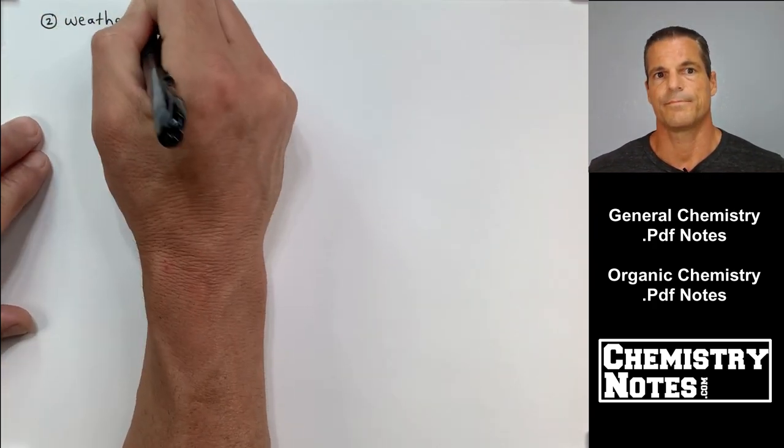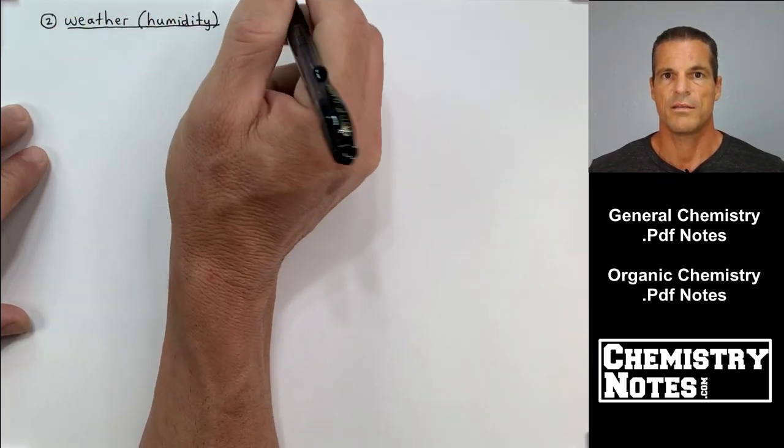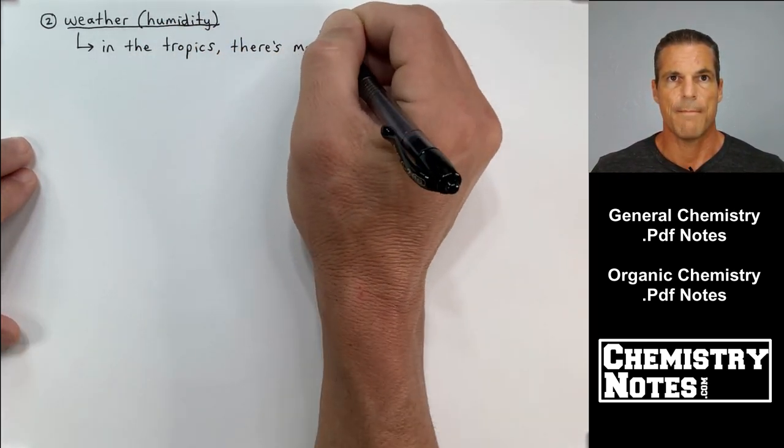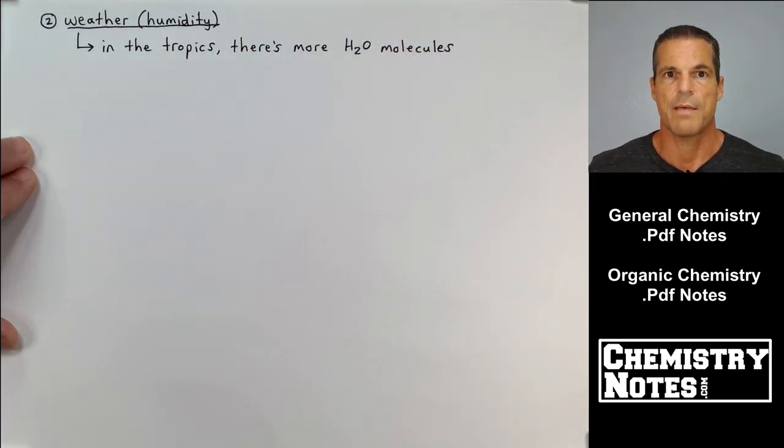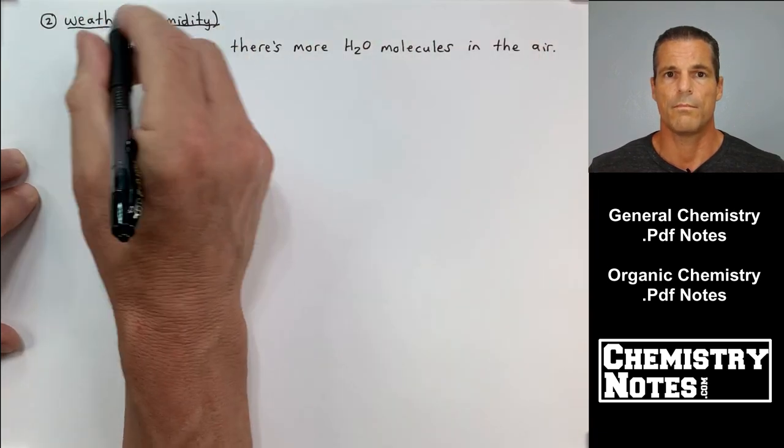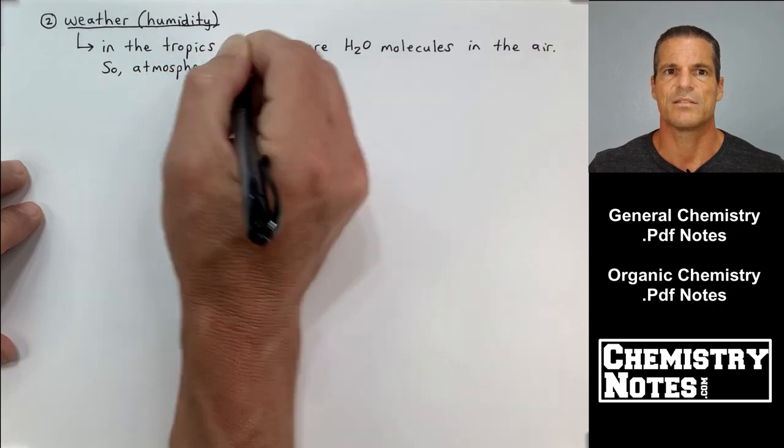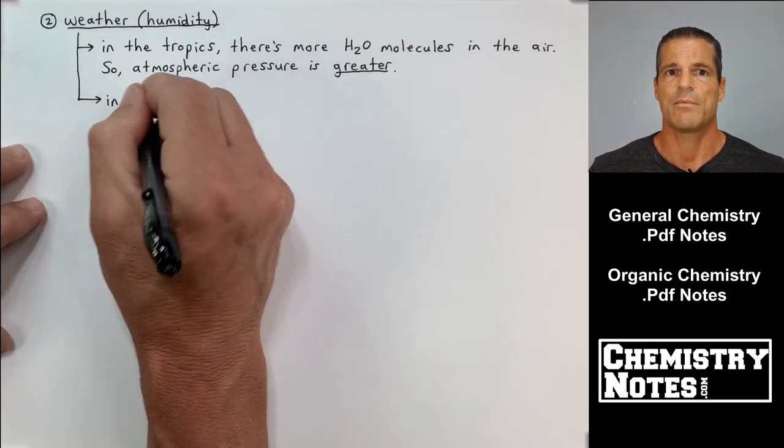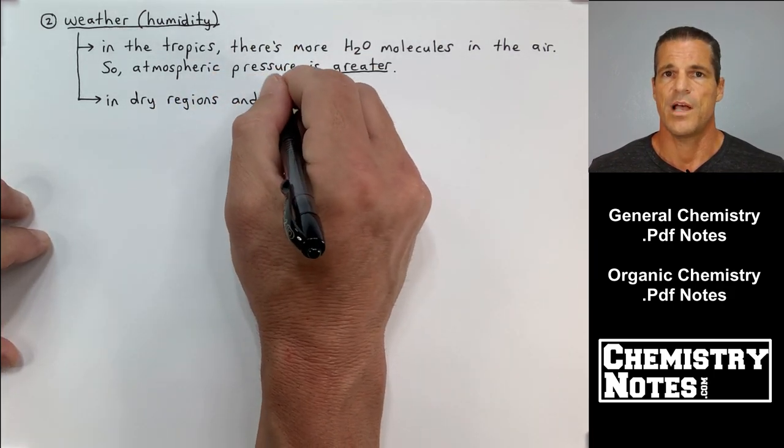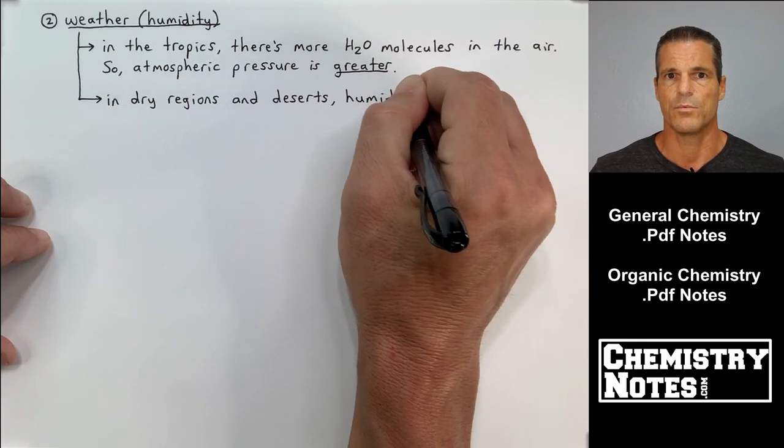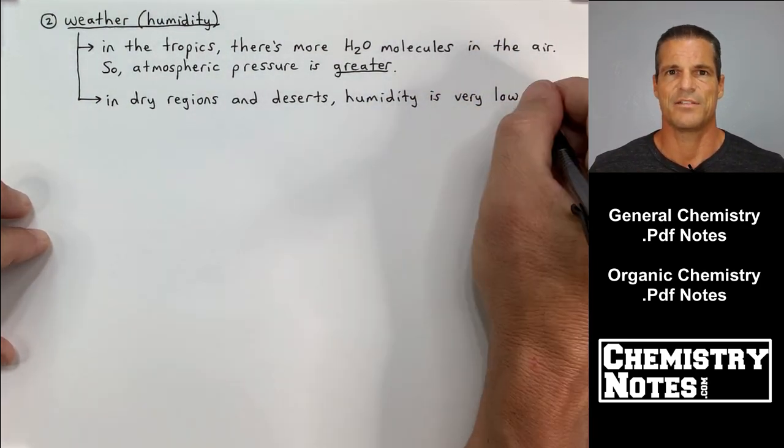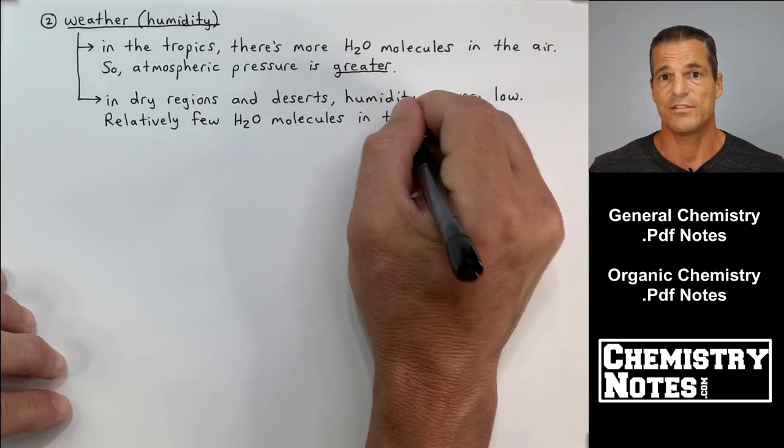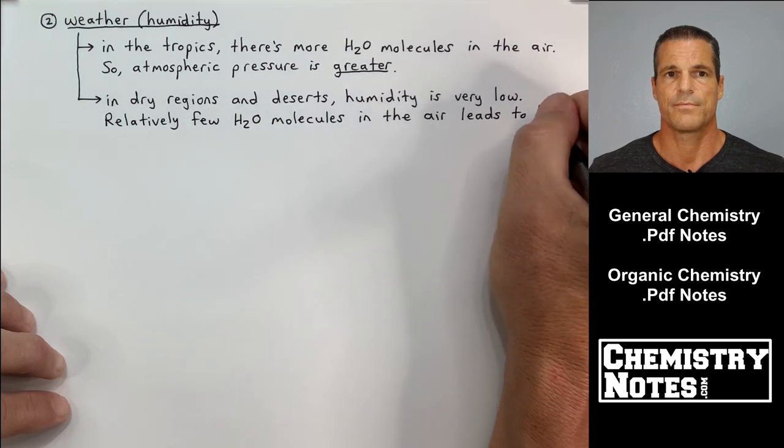The second factor affecting atmospheric pressure is the weather, humidity. The more molecules you have in the atmosphere, the greater the atmospheric pressure. So in the tropics, there's more water molecules in the air. It's very humid, so the atmosphere weighs more and the atmospheric pressure is greater. The opposite is true in dry regions and deserts. Humidity is very low, and relatively few water molecules in the air leads to a lower atmospheric pressure.